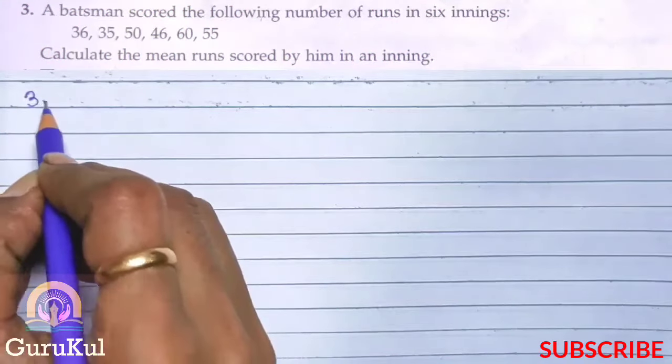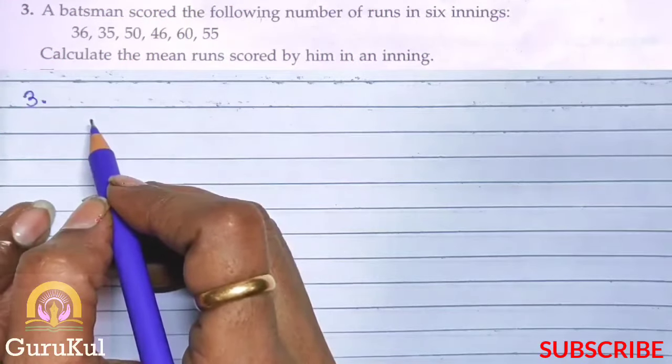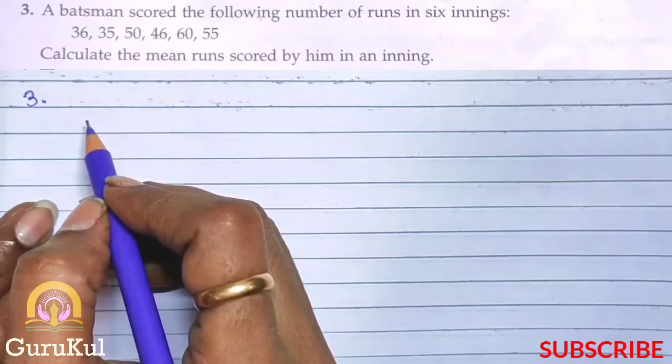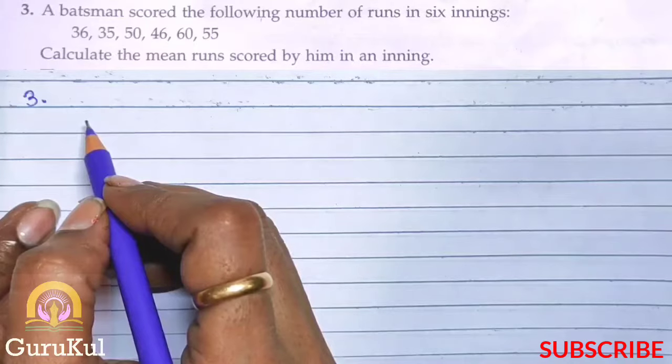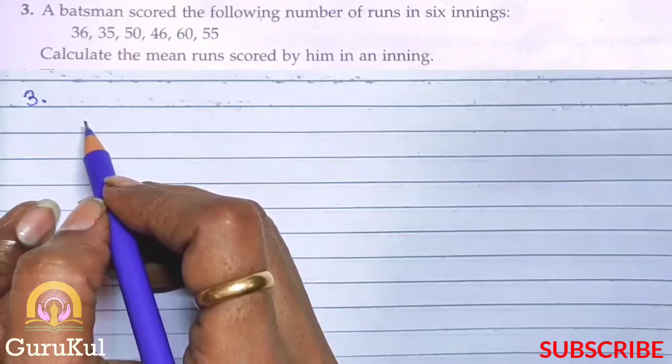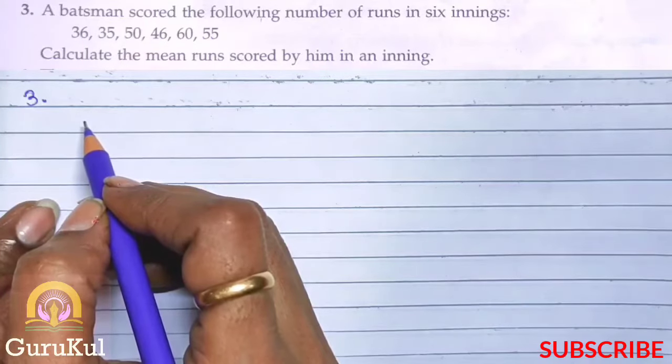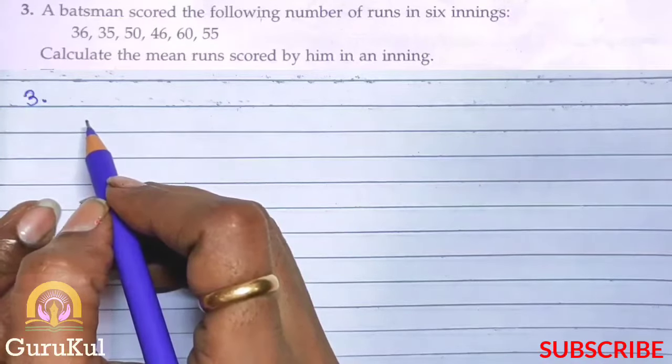Question number 3. A batsman scored the following number of runs in 6 innings: 36, 35, 50, 46, 60 and 55. Now we have to calculate the mean runs scored by him in an inning.